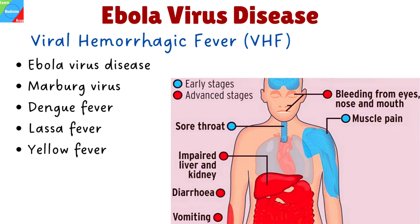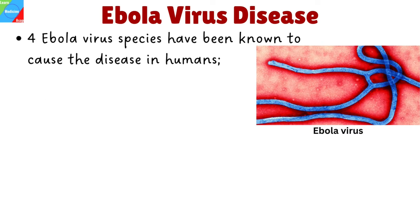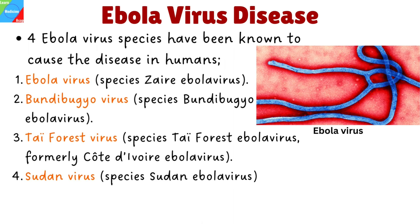Ebola is caused by a virus from the group of viral hemorrhagic fever viruses. Other viruses from this group include Marburg virus, Dengue fever, Lassa fever, and Yellow fever. There are many different strains of Ebola virus that have been identified, but four species have been known to cause the disease in humans. They have been named after where they were discovered, and they include Ebola virus, Bundibugyo virus, Taï Forest virus, and Sudan virus.